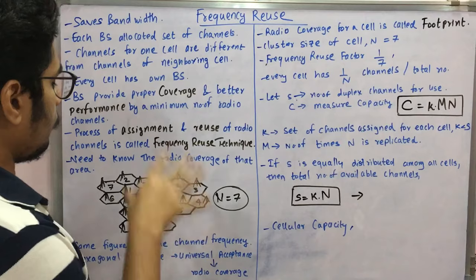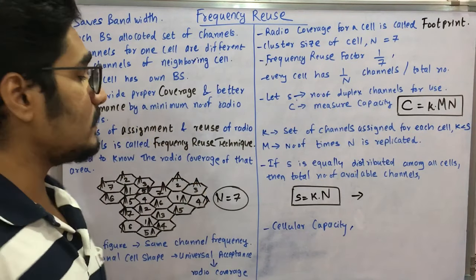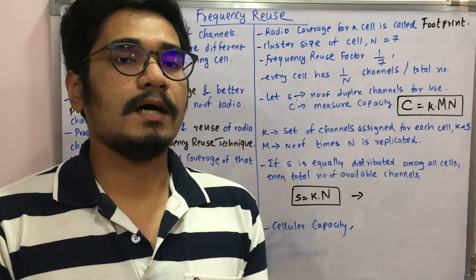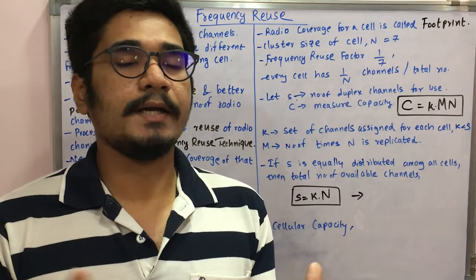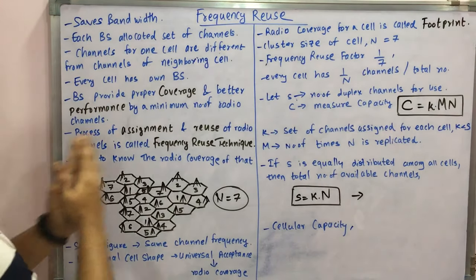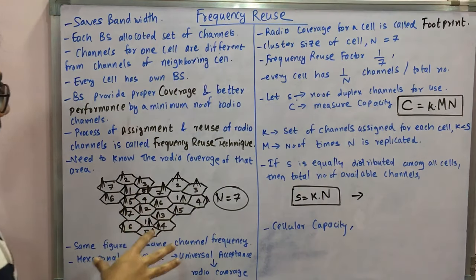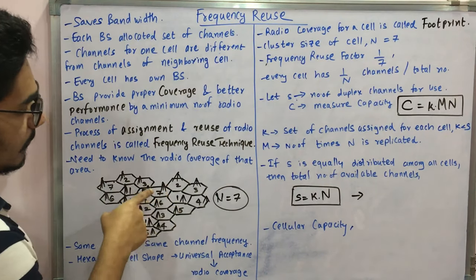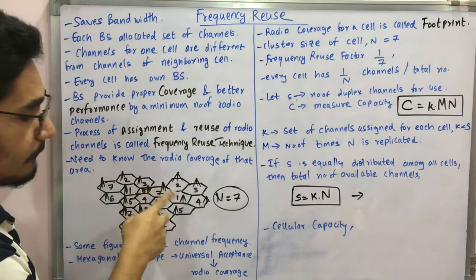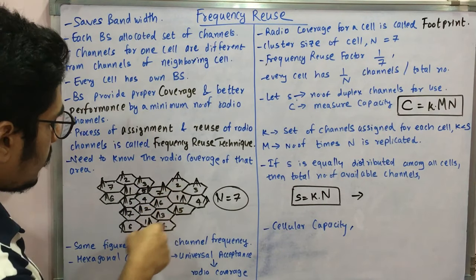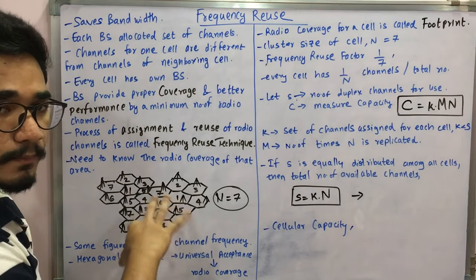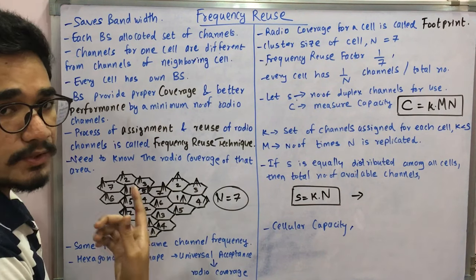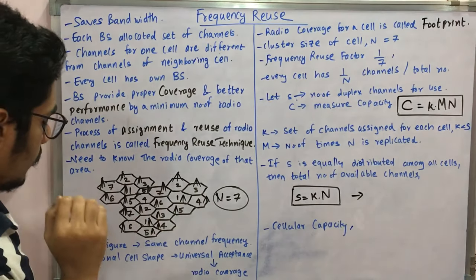This is basically a design process involving the assignment and reuse of radio channels, and this technique is called the frequency reuse technique. You need to estimate the radio coverage extent for a particular area. Looking at the figure with seven different channels and base stations, neighboring cells cannot share the same channel number — for example, cell seven is surrounded by cells three, five, four, six, one, and two, not another seven.